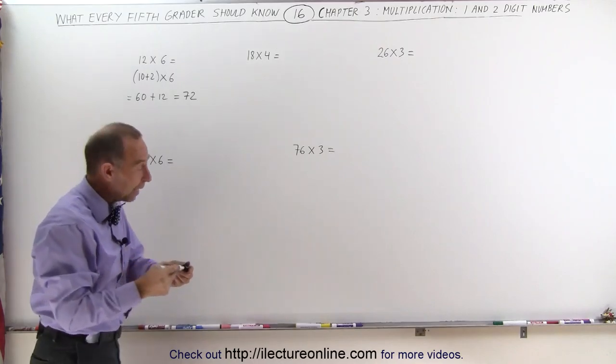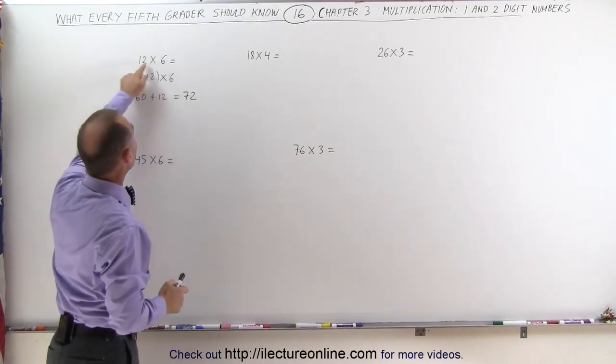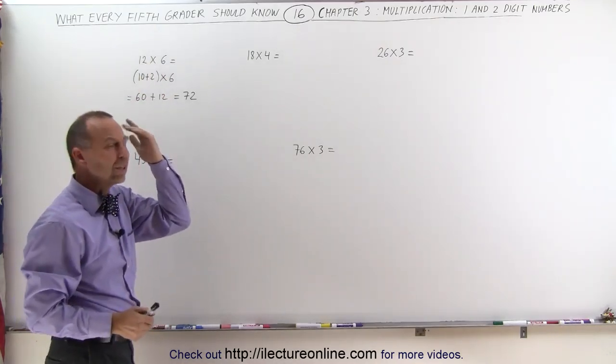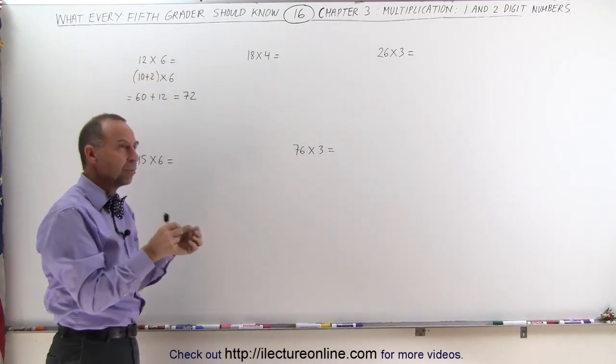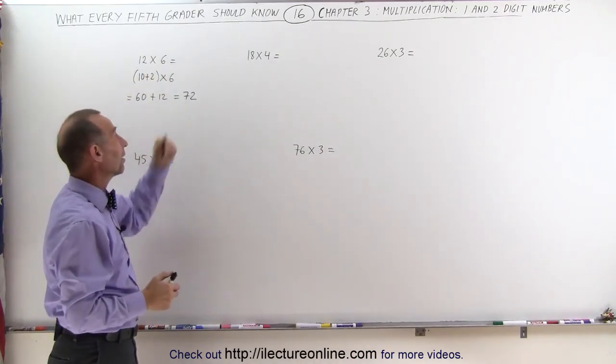So the way we look at a number like that, 6 times 10 is 60. I remember the 60. 6 times 2 is 12. I remember the 12. 60 plus 12 is 72. That's my answer.